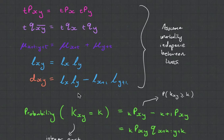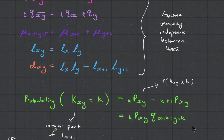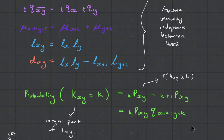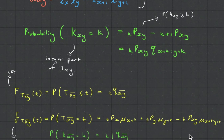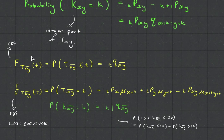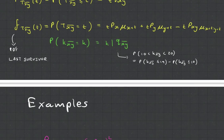In green, what we've got here is KXY, and this is the length of time that both X and Y are alive. The probability that it equals a certain age - you can see it's very similar to when it's just one life. It's just an extension - that's the cumulative distribution function, that's the probability distribution function. Let's go into the examples.